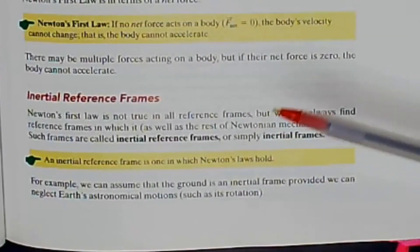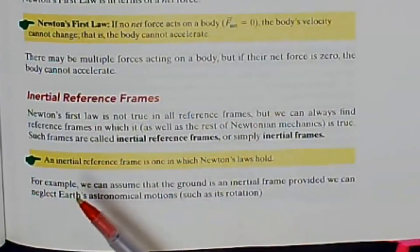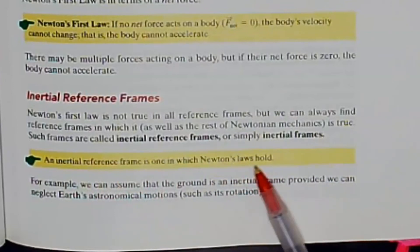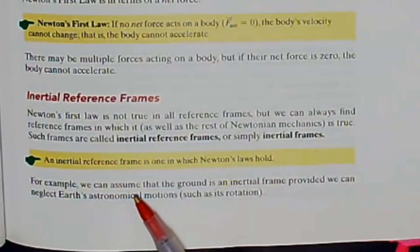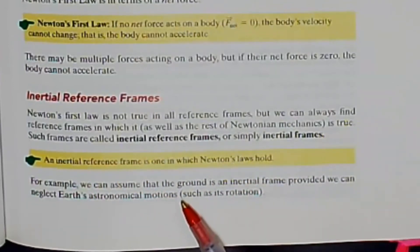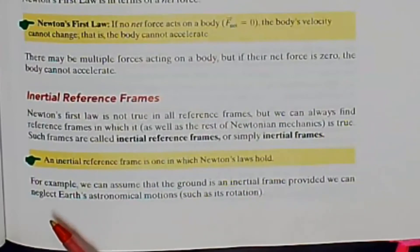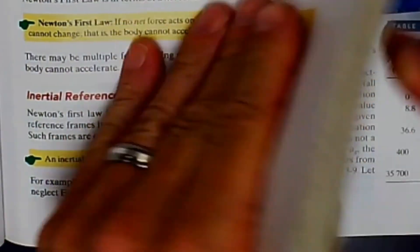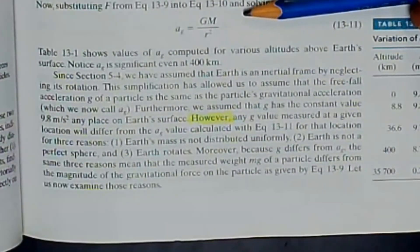This is back in Chapter 5, and we talked about an inertial reference frame is one in which Newton's laws hold. For example, we can assume that the ground is an inertial frame, provided we can neglect Earth's astronomical motions, such as its rotation. Now, we're going to take into account these things.